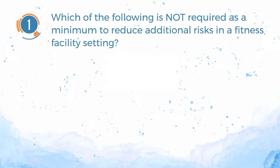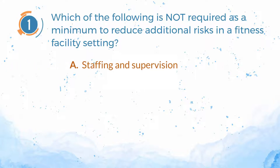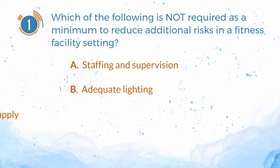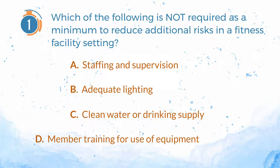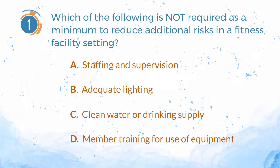Number 1. Which of the following is not required as a minimum to reduce additional risks in a fitness facility setting? A. Staffing and supervision. B. Adequate lighting. C. Clean water or drinking supply. D. Member training for use of equipment.